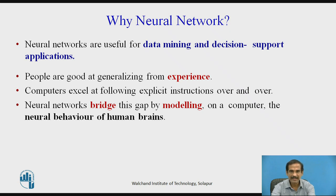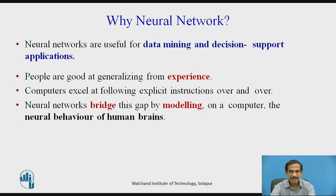Neural networks are useful for data mining, decision, and support applications. People are good at generalizing from experience; however, computers excel at following explicit instructions, which can be done repeatedly in a repetitive fashion. Neural networks bridge this gap between human beings and the computer, modeling the neural network behavior of the human brain as experienced as a model.